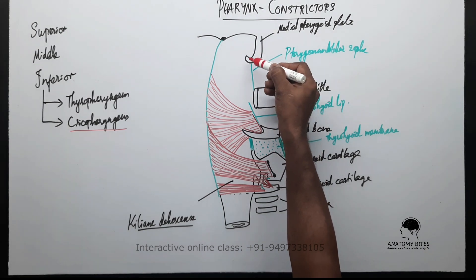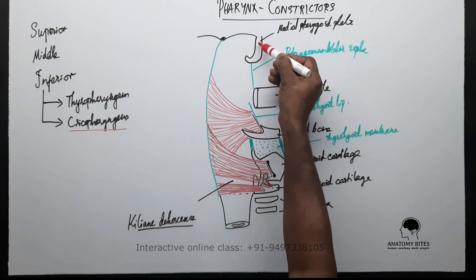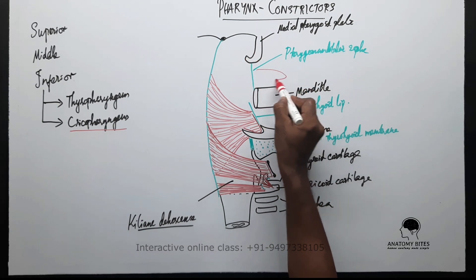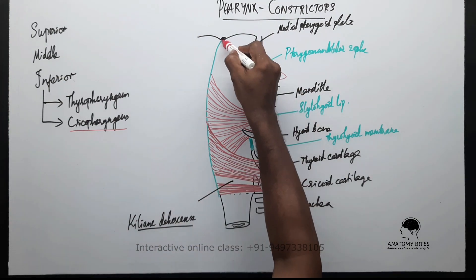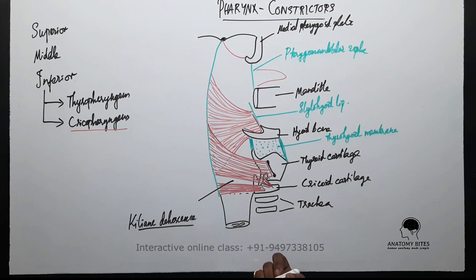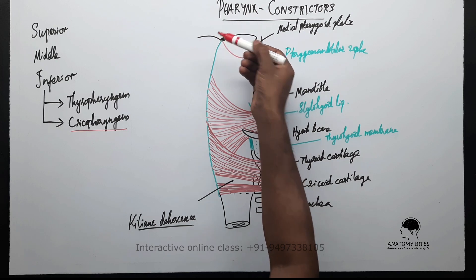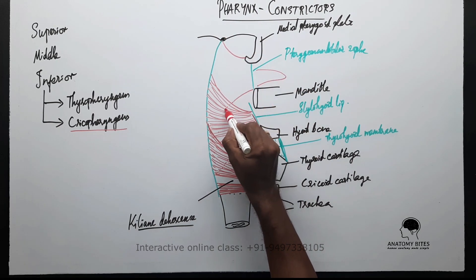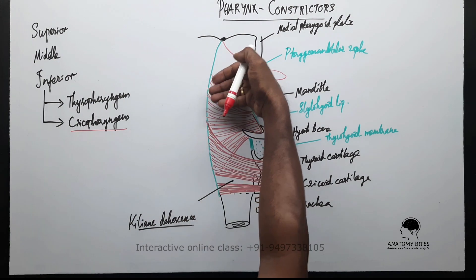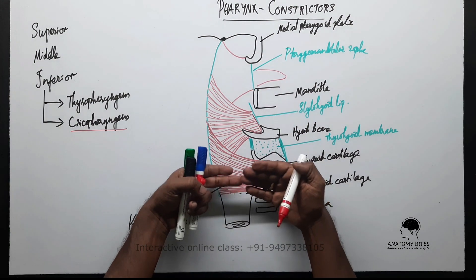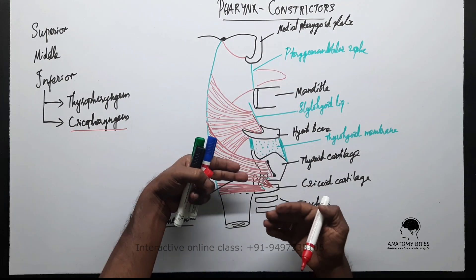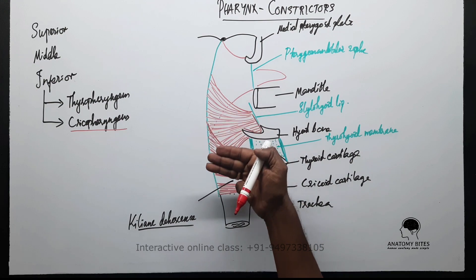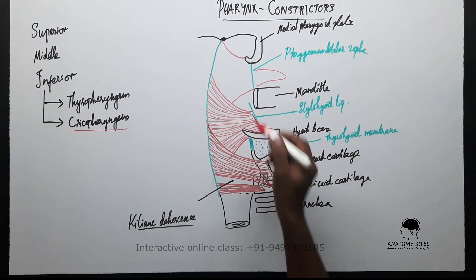The superior constrictor arises from the pterygoid hamulus of the medial pterygoid plate, from the pterygomandibular raphe, from the mandible, and also from the side of the tongue. The upper fibers fan backwards and upwards and are inserted into the pharyngeal tubercle and base of skull, while the lower fibers fan down and pass deep to the middle constrictor. So actually these three constrictors are stacked such that the superior is overlapped by the middle, and the middle is overlapped by part of the inferior constrictor.